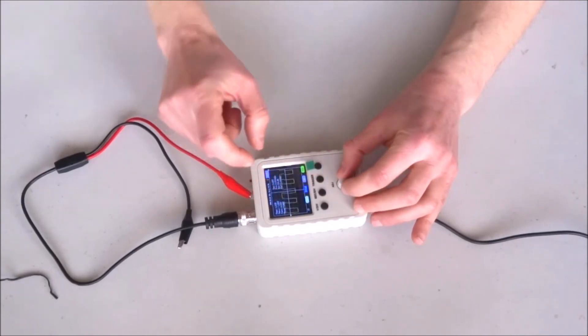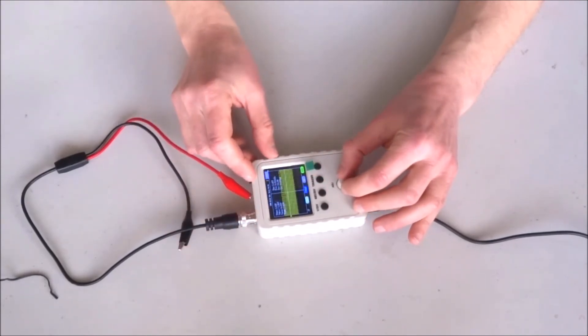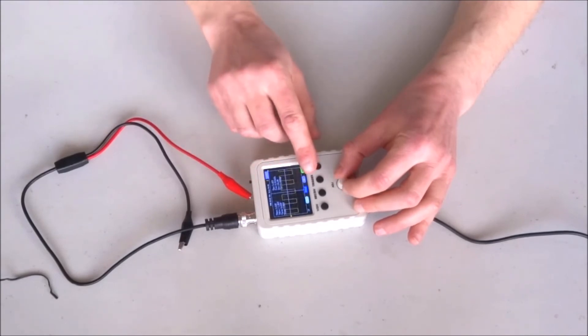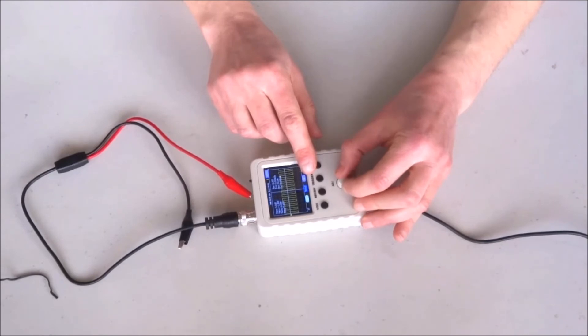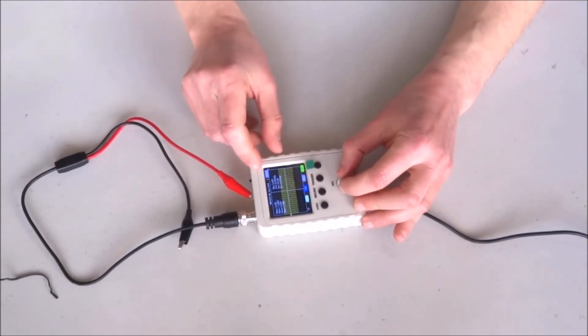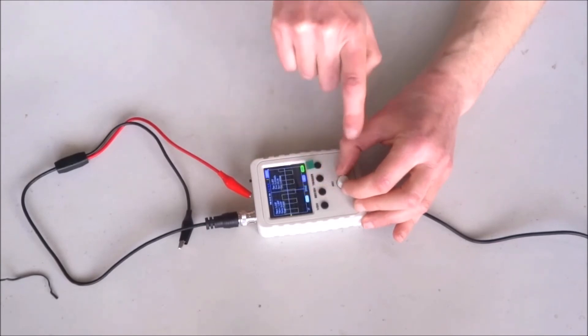This is the horizontal axis, effectively the time units, so 50 microseconds, 500 microseconds, 1 millisecond.